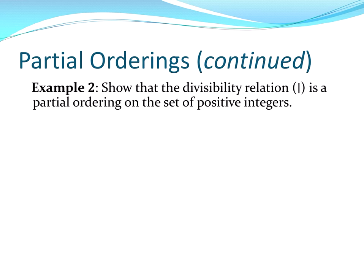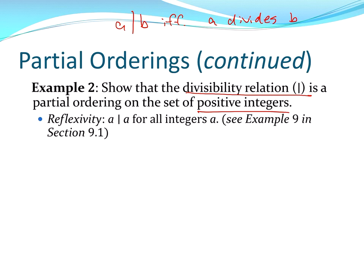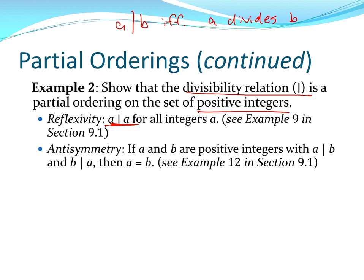Let's look at another example: the divisibility relation. The divisibility relation — a divides b if and only if b is a multiple of a. Here we're on the set of positive integers. Is it reflexive? Yes, every positive integer divides itself, so it is reflexive. Antisymmetric: if a divides b and b divides a, then a must equal b.